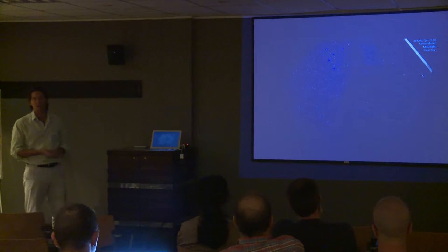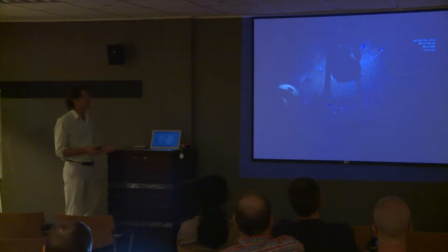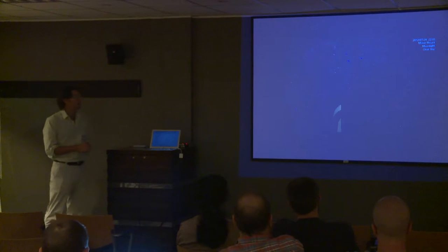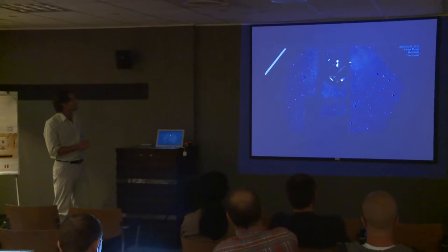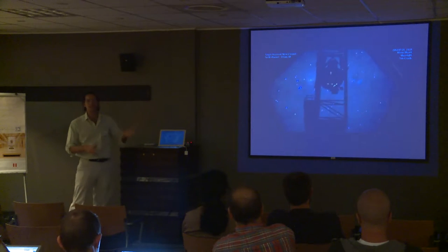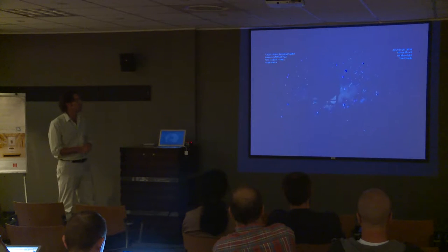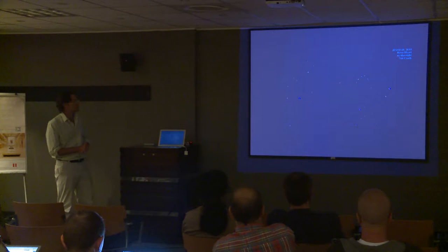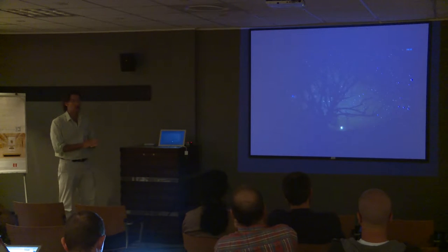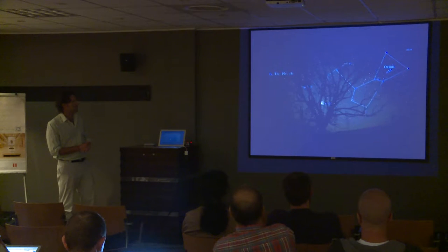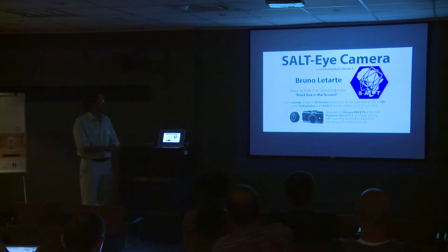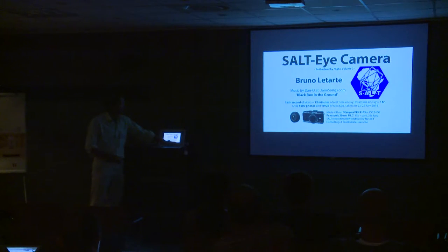Throughout the night the telescope makes a wide range of different observations — here it's targeting a supernova in a nearby galaxy, and here it's observing a comet. This is a time-lapse, so it's sped up a bit, but this is basically what it looks like from the primary mirror observing with SALT throughout the night. It's a nice video put together by astronomer Bruno Letarte, who used to work at SAAO and is now at Northwest University.